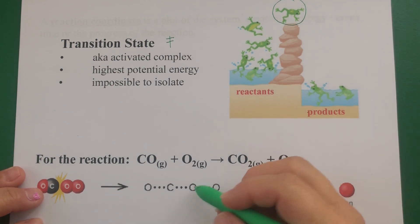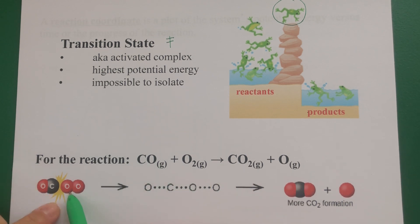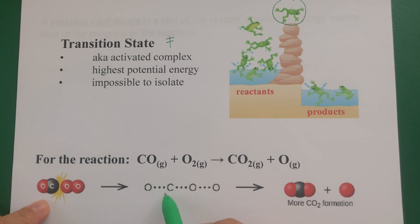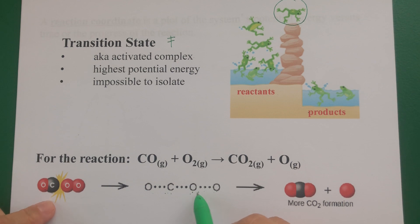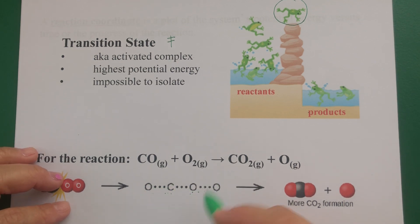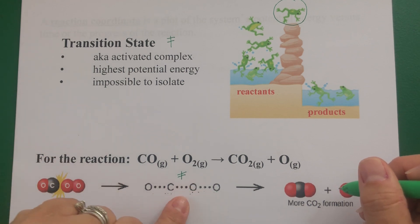Looking at the molecule level, for the reaction we saw earlier with carbon monoxide and oxygen: they can hit in the right place with the right energy, and when they collide, those bonds between the carbon and oxygen start coming apart while the new carbon-oxygen bond starts forming. This is what it would be like to have a transition state — they quickly rearrange into the final product and don't stay there for very long.